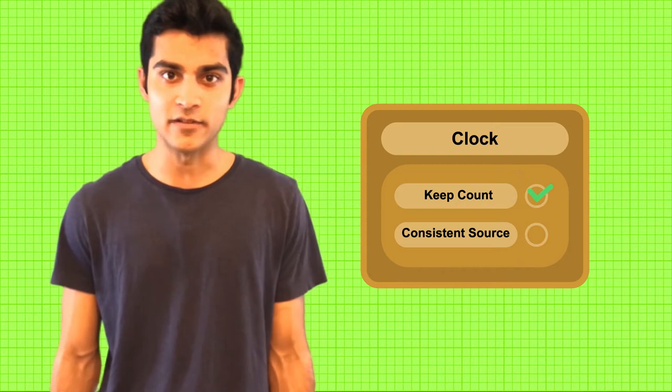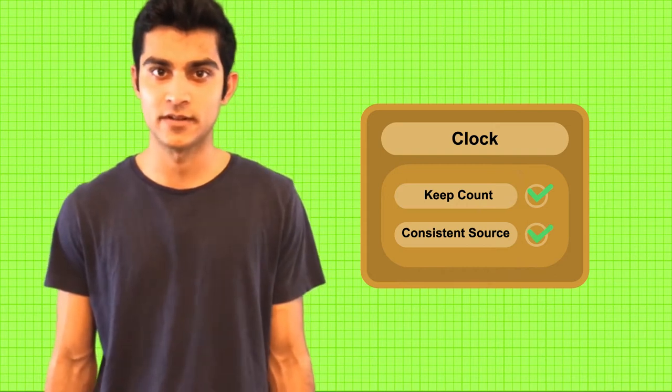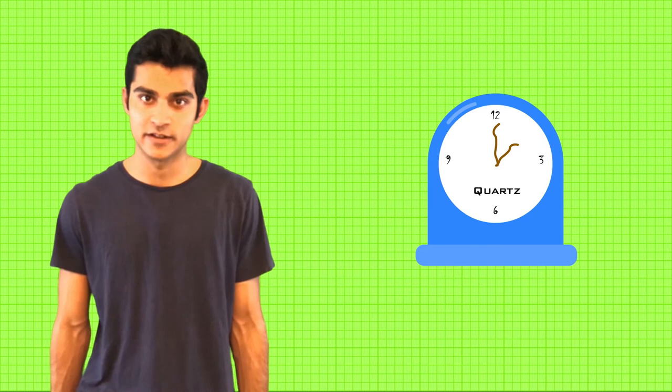A clock is anything that can keep count of some consistent source. One of the cheapest and most widely used clocks today is a quartz crystal clock, found in many things from watches to computers. It works by counting the number of vibrations in a tuning fork shaped quartz crystal when electricity passes through it.